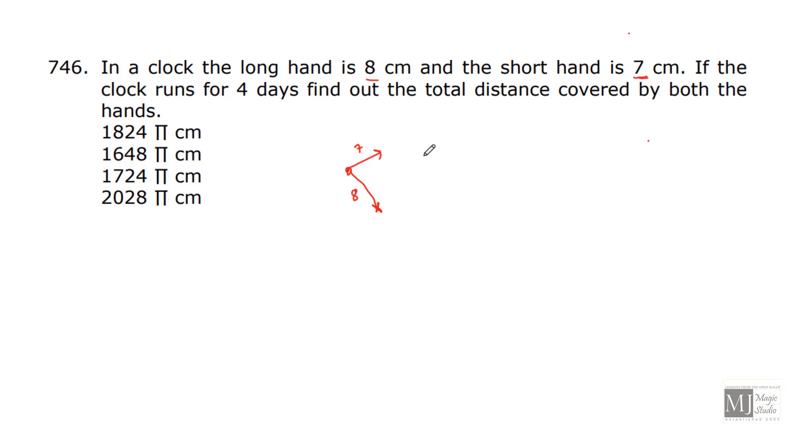Then what is the distance travelled by this long hand in 4 days? This would be 4 days into 24 hours a day, because it is covering 1 circumference in 1 hour. That is why I multiply by 24 hours into 2πr. And r is 8 cm. So, it gives me 6 into 2, 16 into 4, 64 into 24 is 1536π.